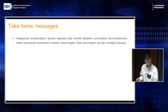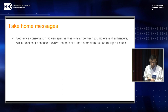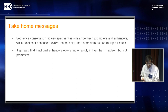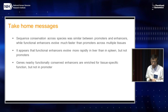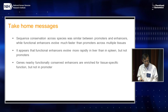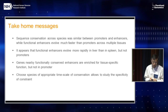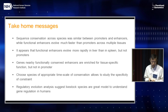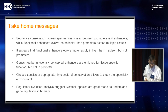Some take-home messages: Sequence conservation across species is pretty similar between promoters and enhancers, but functional conservation evolves much, much faster in enhancers than in promoters. Functional enhancers evolve much more rapidly in liver than in spleen, but not for promoters. Genes nearby functionally conserved enhancers are very enriched for tissue-specific pathways, but not so for promoters. Choosing species at appropriate timescales of conservation will allow us to study specific constraints of function. Regulatory evolution analysis really suggests that livestock and agricultural species are great models to understand gene regulation in humans.